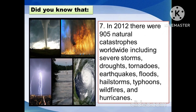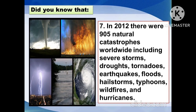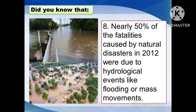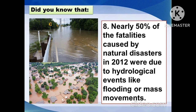In 2012, there were 905 natural catastrophes worldwide, including severe storms, droughts, tornadoes, earthquakes, floods, hailstorms, typhoons, wildfires, and hurricanes. Nearly 50% of the fatalities caused by a natural disaster in 2012 were due to hydrological events like flooding or mass movements.